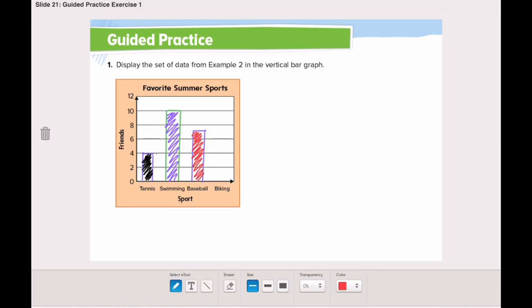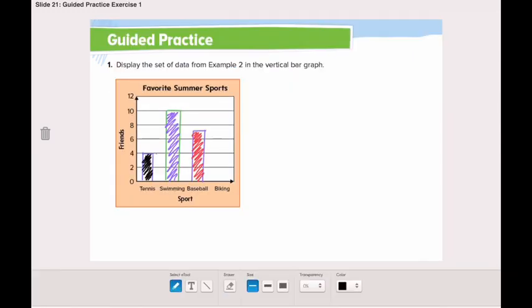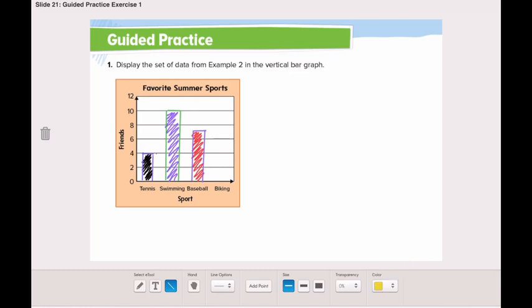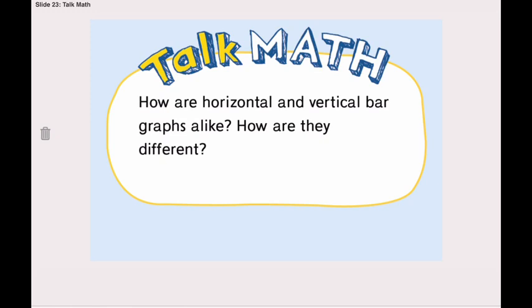The last one, biking: 6 friends voted for biking, so we draw to number 6. Now we're done with our vertical bar graph. What I need from you is to answer: how are horizontal and vertical bar graphs alike, and how are they different? Send your answers on Class Dojo.